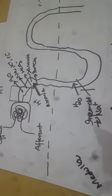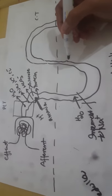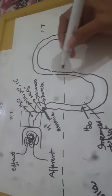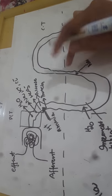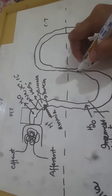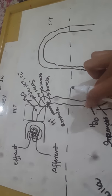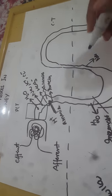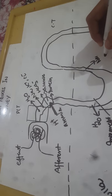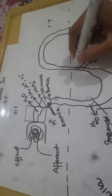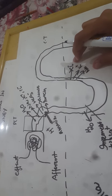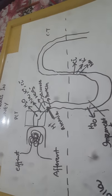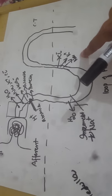Then comes the ascending limb. In the ascending limb, sodium, potassium, and chloride are reabsorbed from the tubule back into circulation. Nothing is secreted here. Remember: in the descending limb only water is reabsorbed because it is impermeable to sodium; in the ascending limb, sodium, potassium, and chloride are reabsorbed.